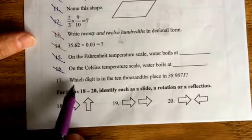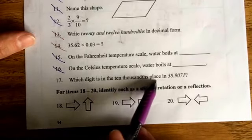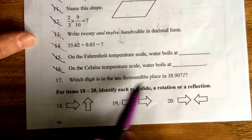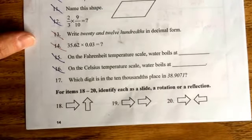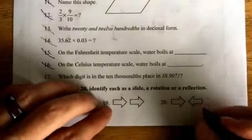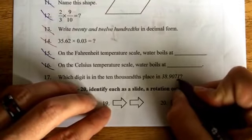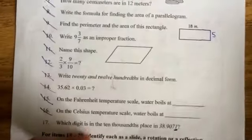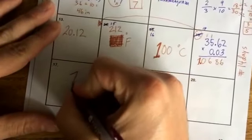Problem number 17, which digit is in the 10,000th place in 38.9071? And this 1 is actually in the 10,000th place. So we're going to go ahead and flip to the back, number 17, and put a 1 there.